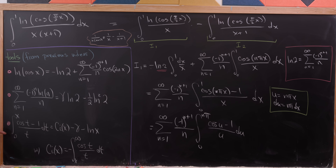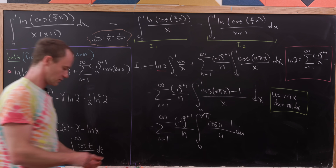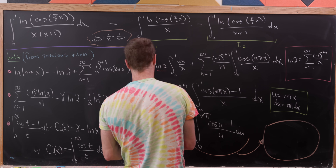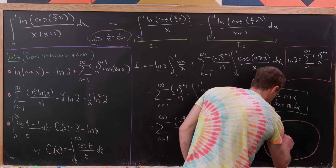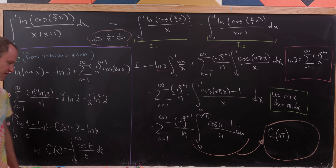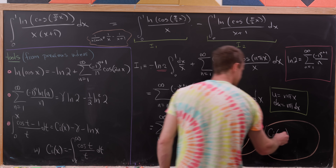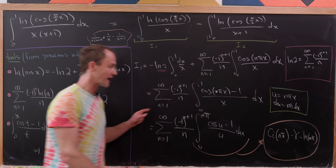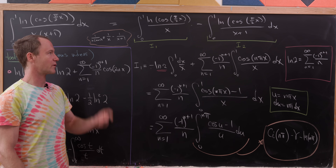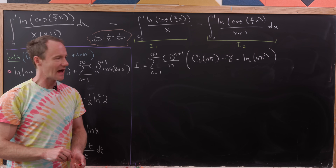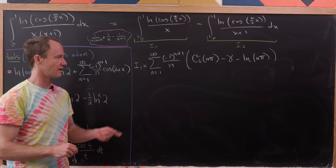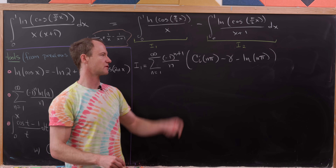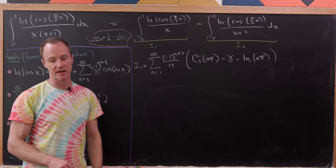We now apply our third tool to this integral. The integral from 0 to nπ of (cos u − 1)/u du equals Ci(nπ) minus γ minus ln(nπ). Substituting this back, I₁ becomes the sum from n=1 to infinity of (−1)^(n+1)/n times [Ci(nπ) − γ − ln(nπ)].